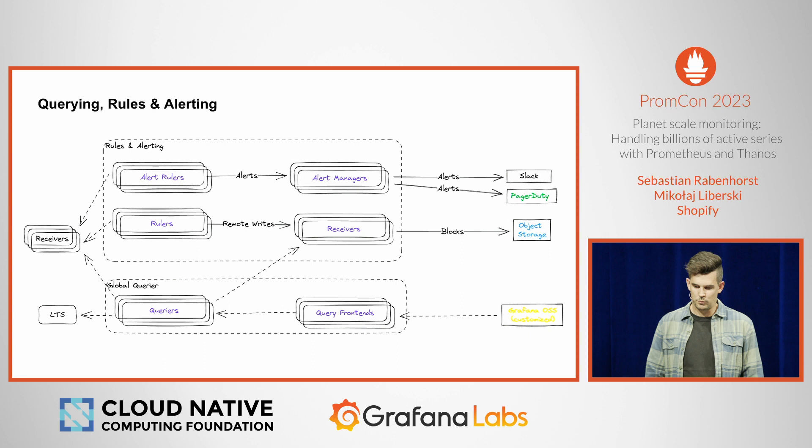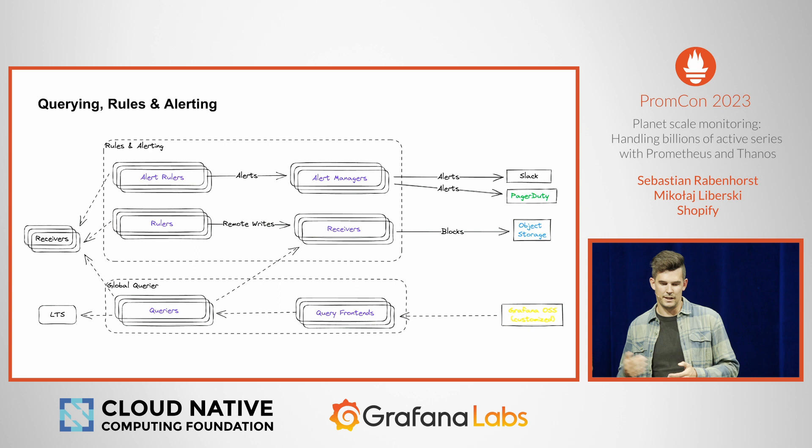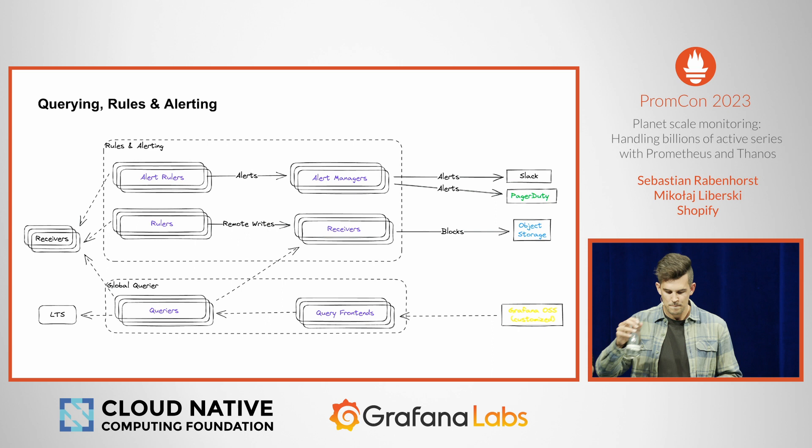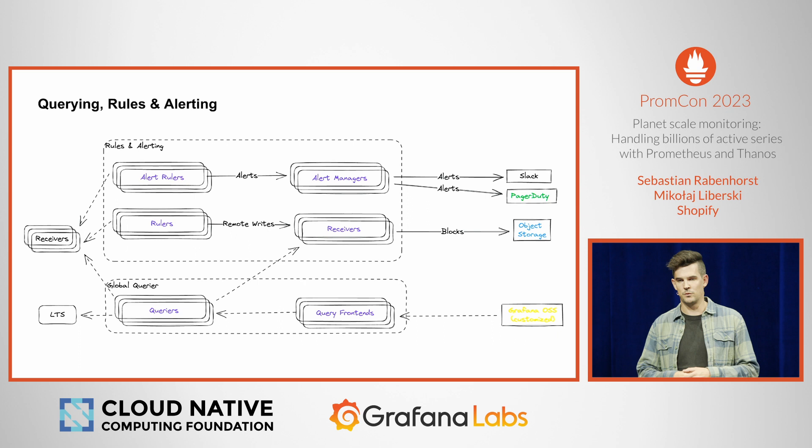We call this the global query. The global query is a set of queries that queries the regional receivers, the long-term storage, and the results from the rule receiver. For caching, we have a query frontend in front of the queries, and everything can be queried via Grafana, which is customized via plugins. Mikko will now tell you how this works.